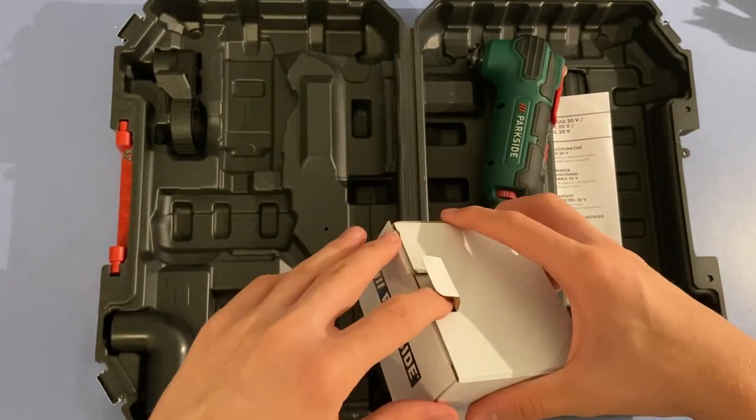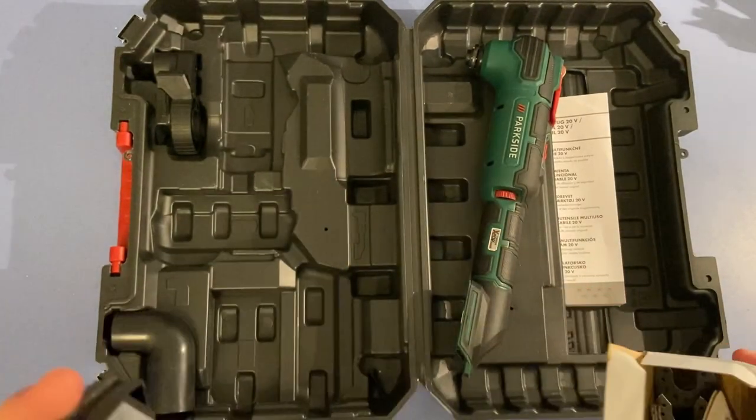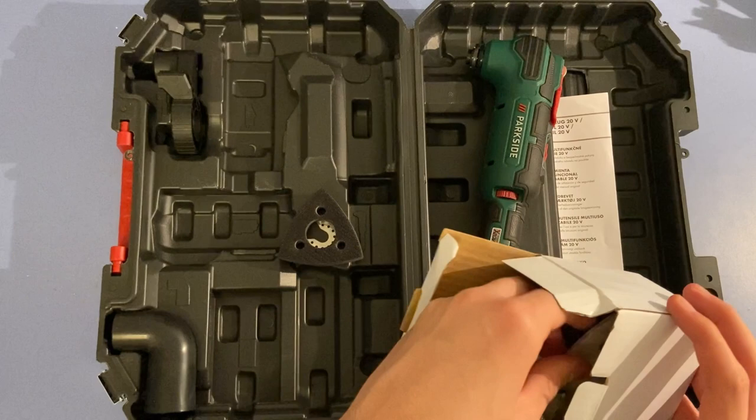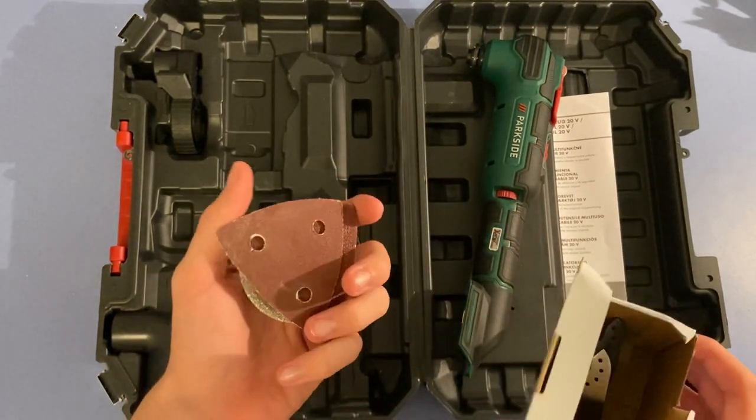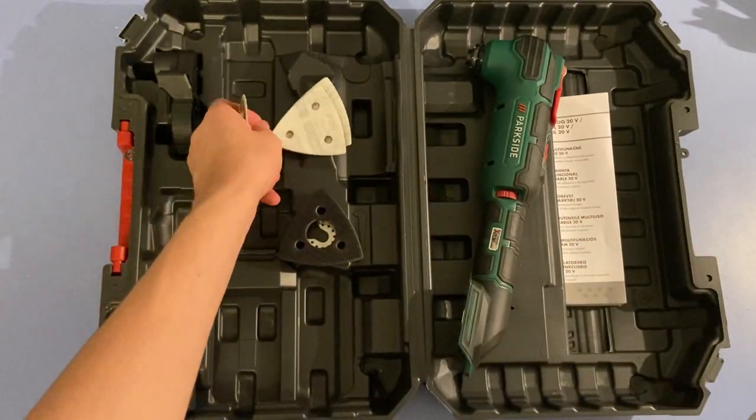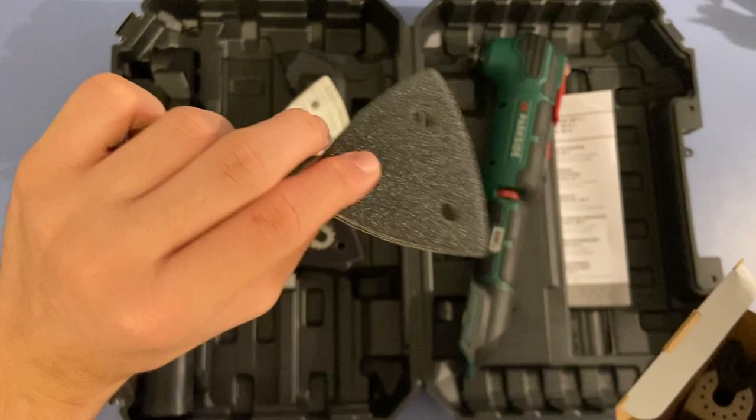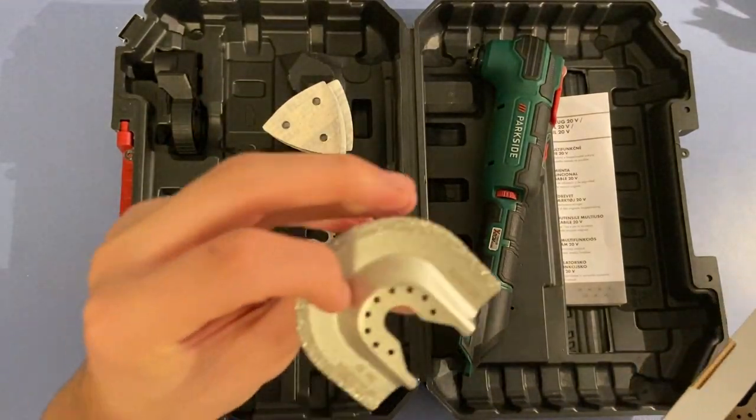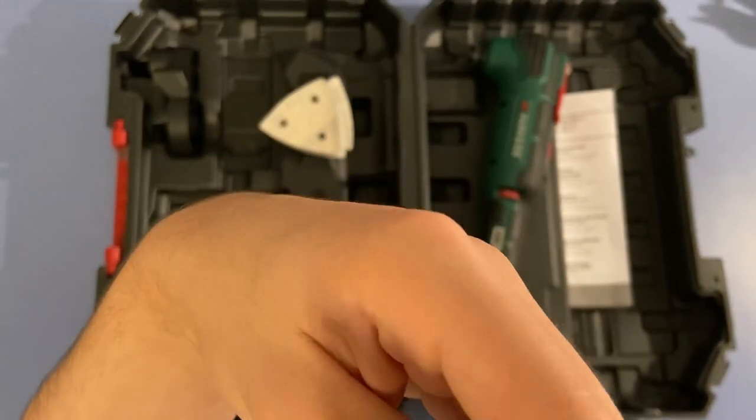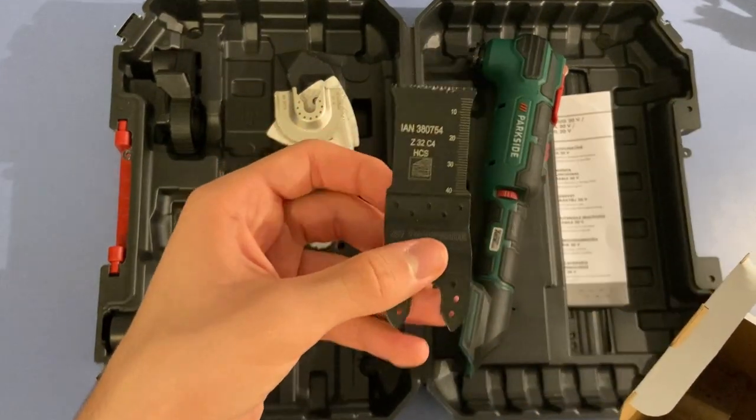And inside are a couple of attachments that you can use. Let's go over them. This is an attachment that can be used with each one of these sanders here. There's two types specifically in this box, each with different types of grit. We have this one, which I'm not really sure about. This one I think is for cutting metal and stuff, and we have this one for cutting wood.